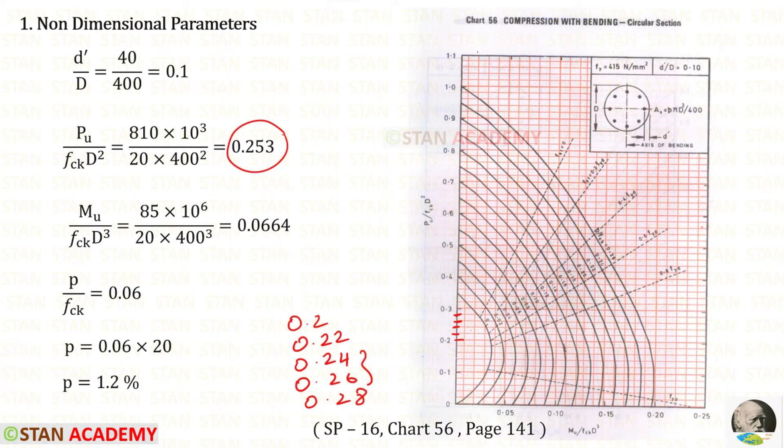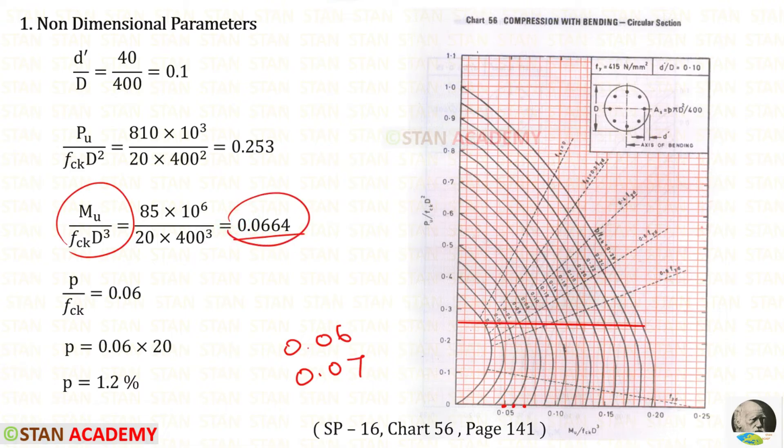For M_u upon f_ck D cube we have got these. This is 0.05, this one is 0.06 and this one is 0.07. 0.064 comes between these two. Both of the lines intersecting in this point.